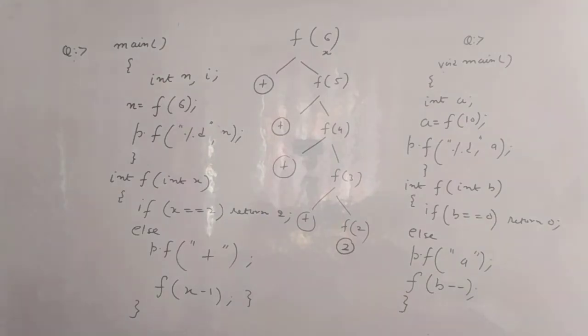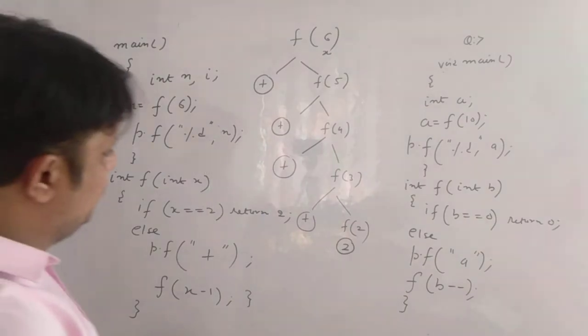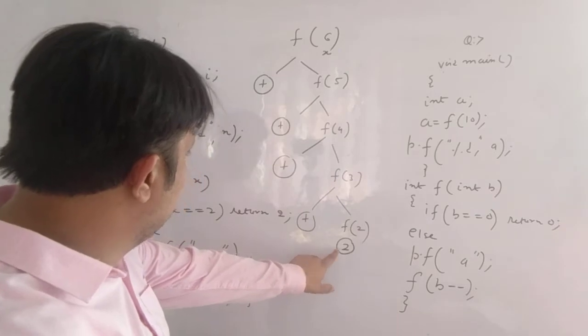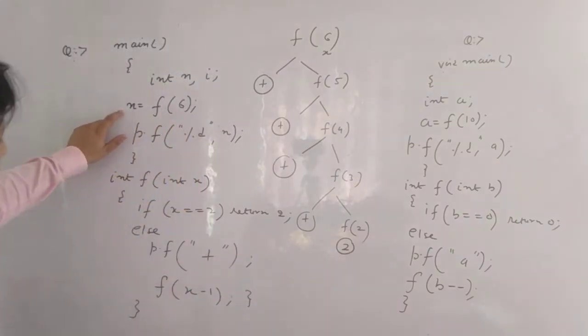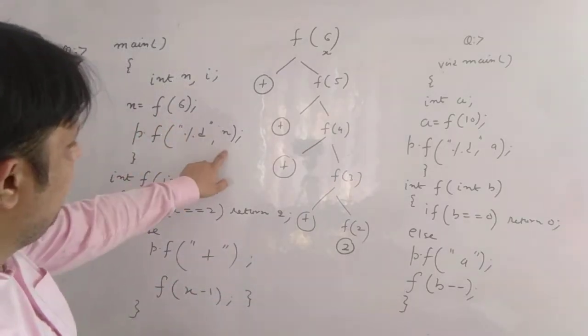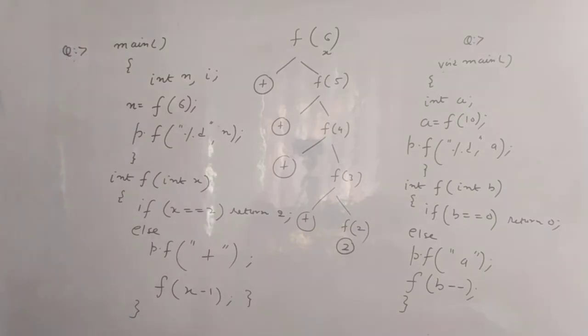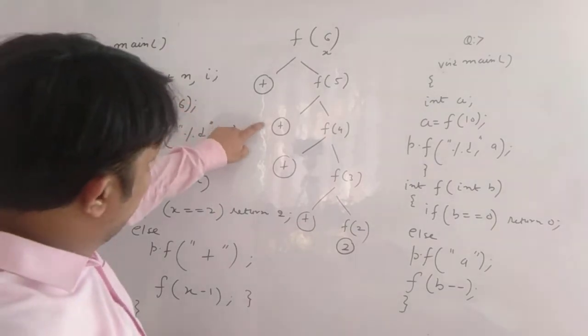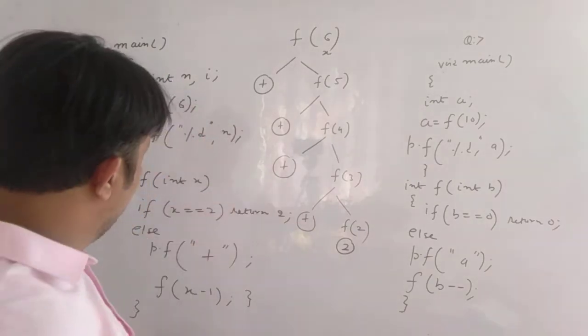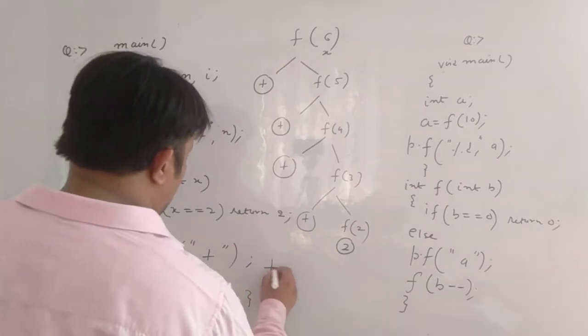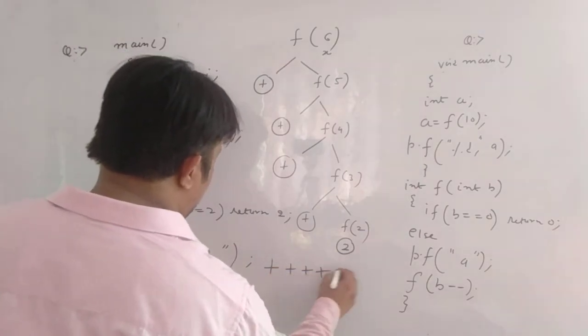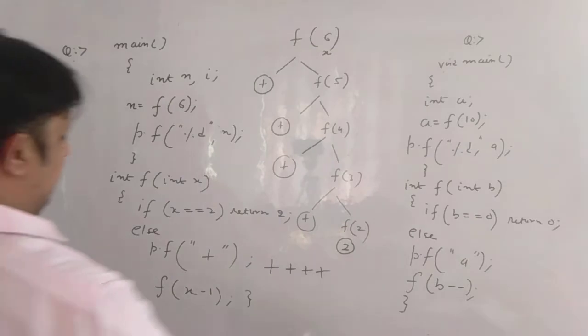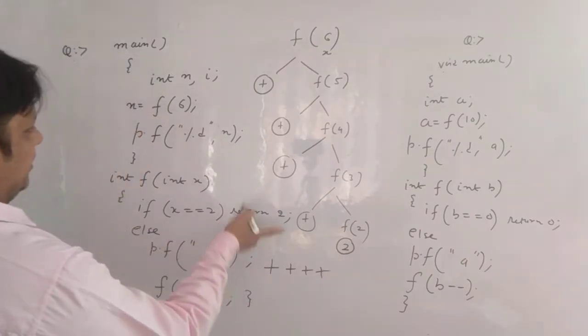So what is the answer when it returns 2? So when it returns 2, 2 gets stored in this function. n is equal to 2 and that gets printed. But before that you are printing 1, 2, 3, 4 pluses. Before that there are 4 plus signs you are printing. And then when you call this function, x becomes 2. So return 2.